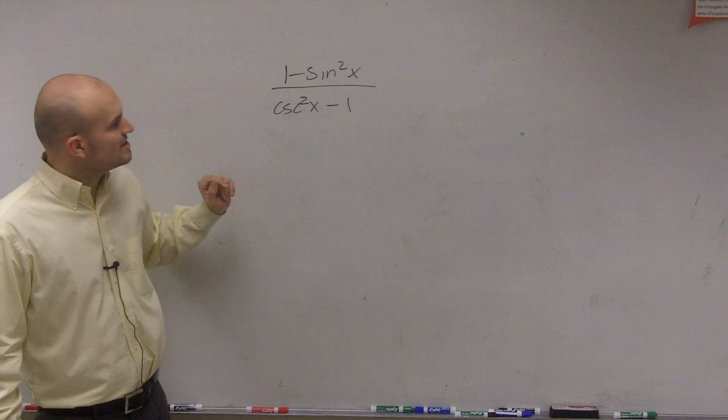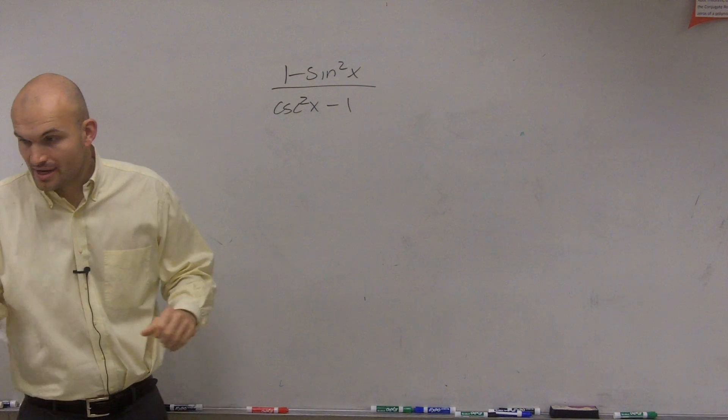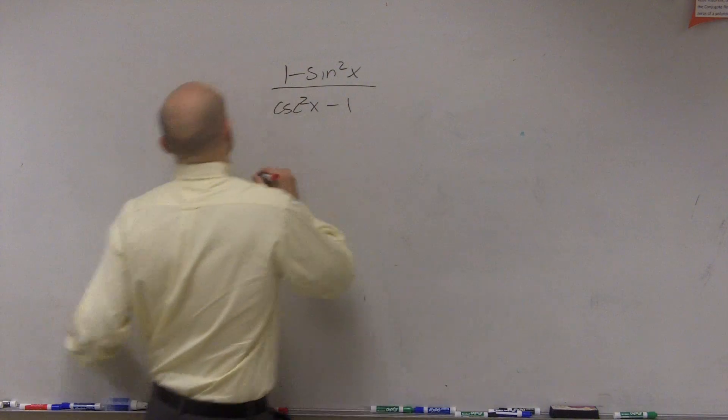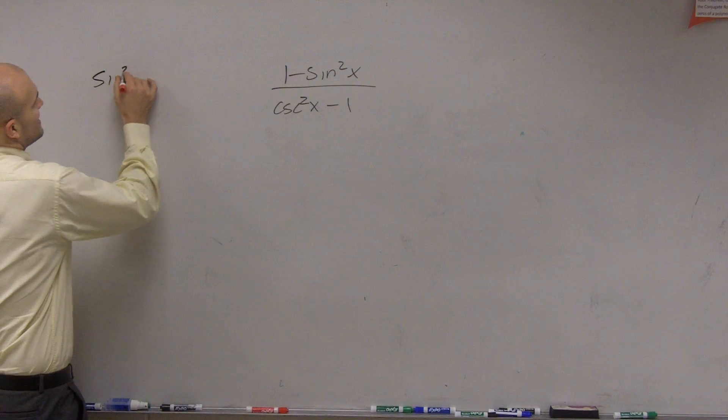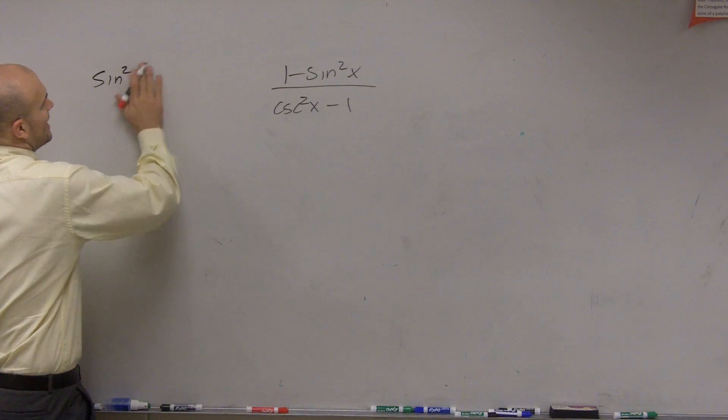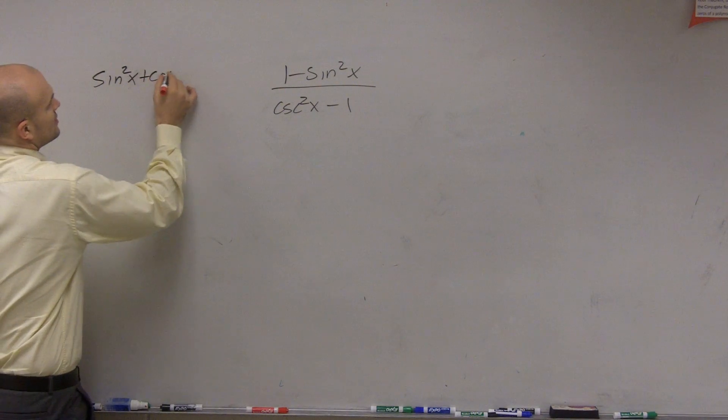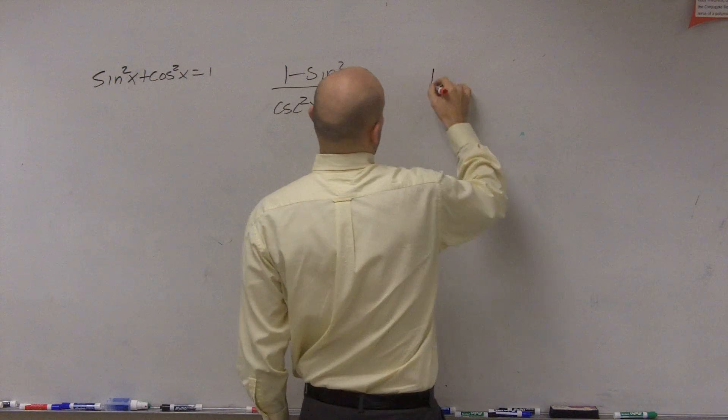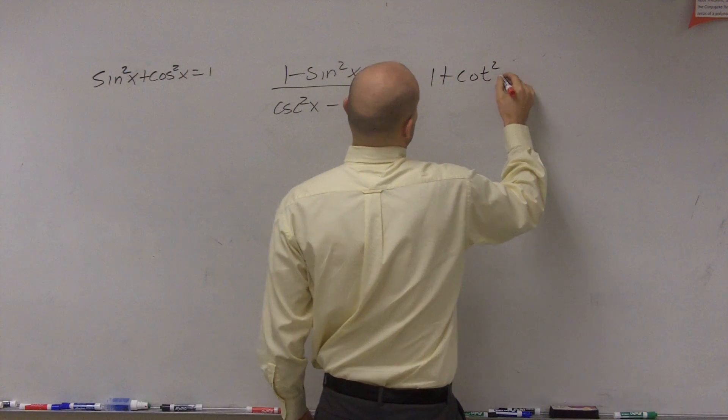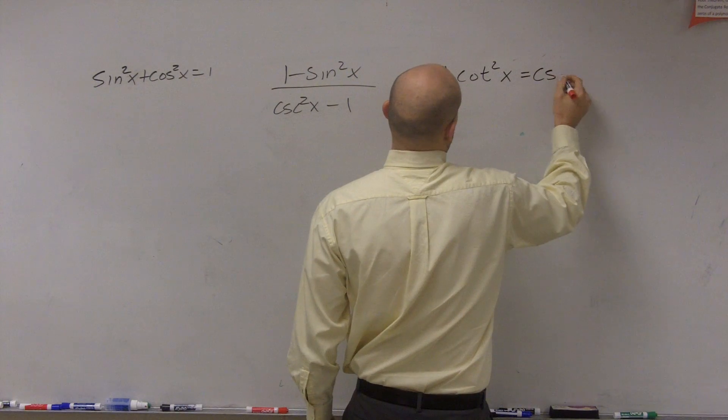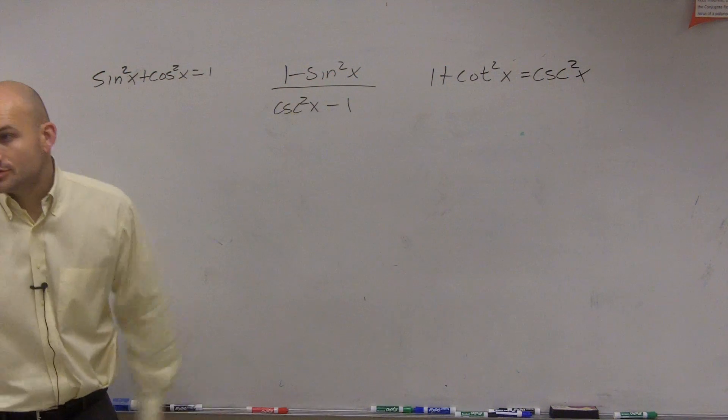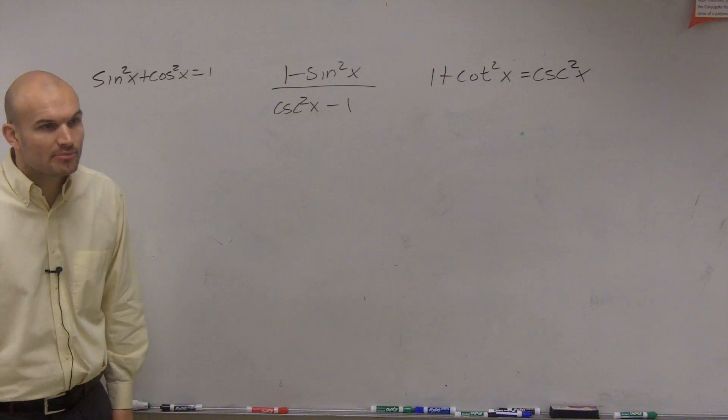So let's go ahead and write out the ones that deal with sine squared and cosecant squared. I gave you guys that little quiz to test you. You need to know that sine squared of x plus cosine squared of x equals 1, and 1 plus cotangent squared of x equals cosecant squared of x. You have to know those two Pythagorean identities to apply them.